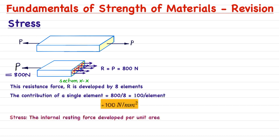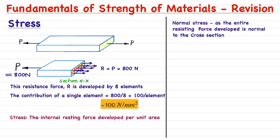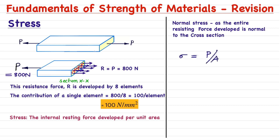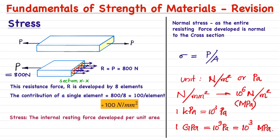Stress is simply defined as the internal resisting force developed per unit area. The stress discussed here is named normal stress because the entire resisting force developed is normal to the cross section. If you take any cross section, the entire resisting force developed will be in the direction normal to it, creating normal stress. It is represented as sigma, equal to total load divided by total area. Here the total load is 800 newton and total area is 8 mm², giving 100 newton per mm² as the stress.